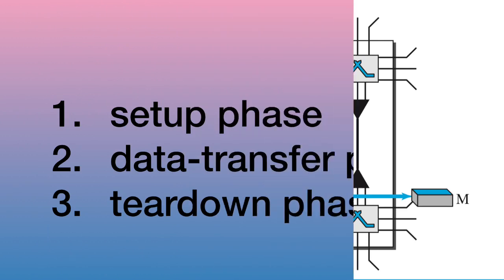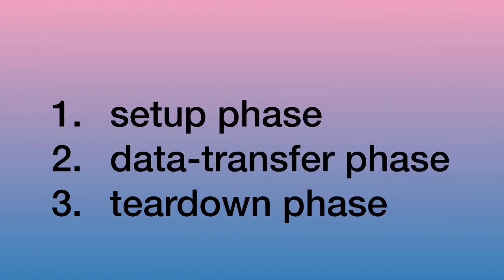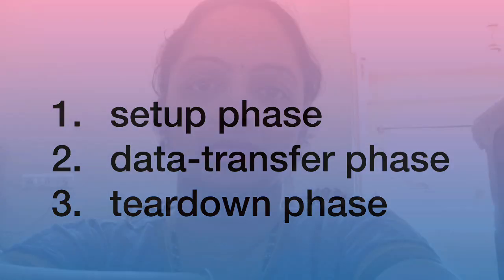Let us next see how data communication happen in circuit switched network. There are three phases. First one is setup phase, second data transfer phase, third one is teardown phase.